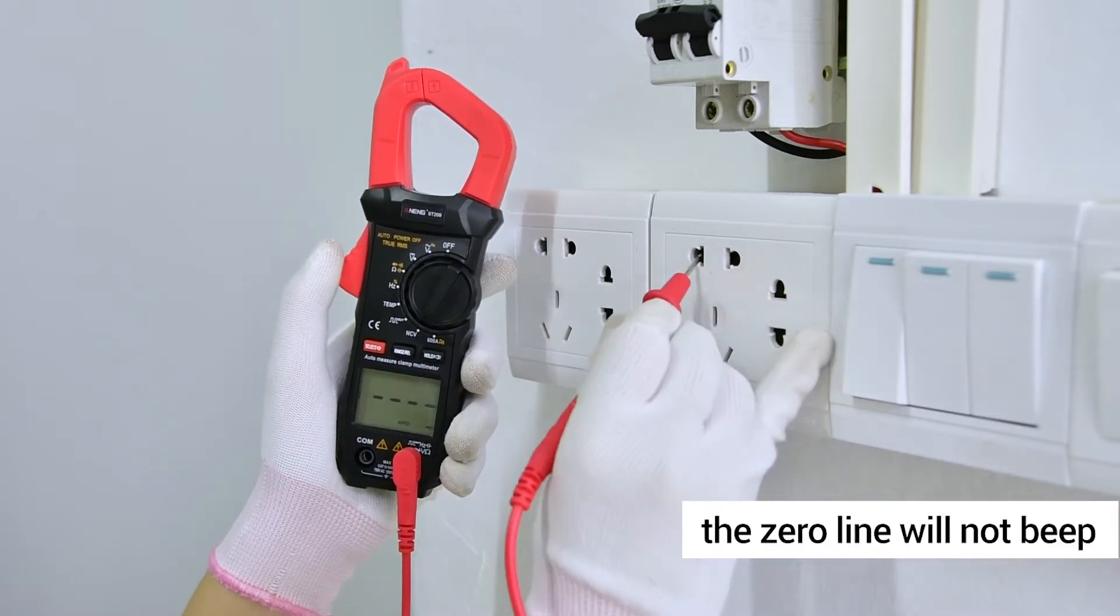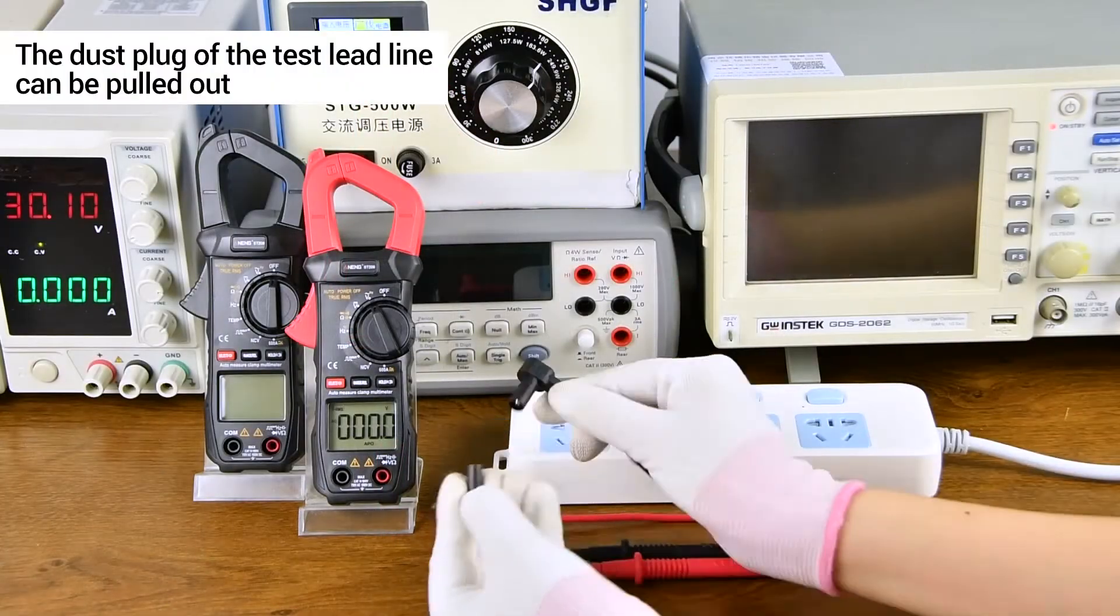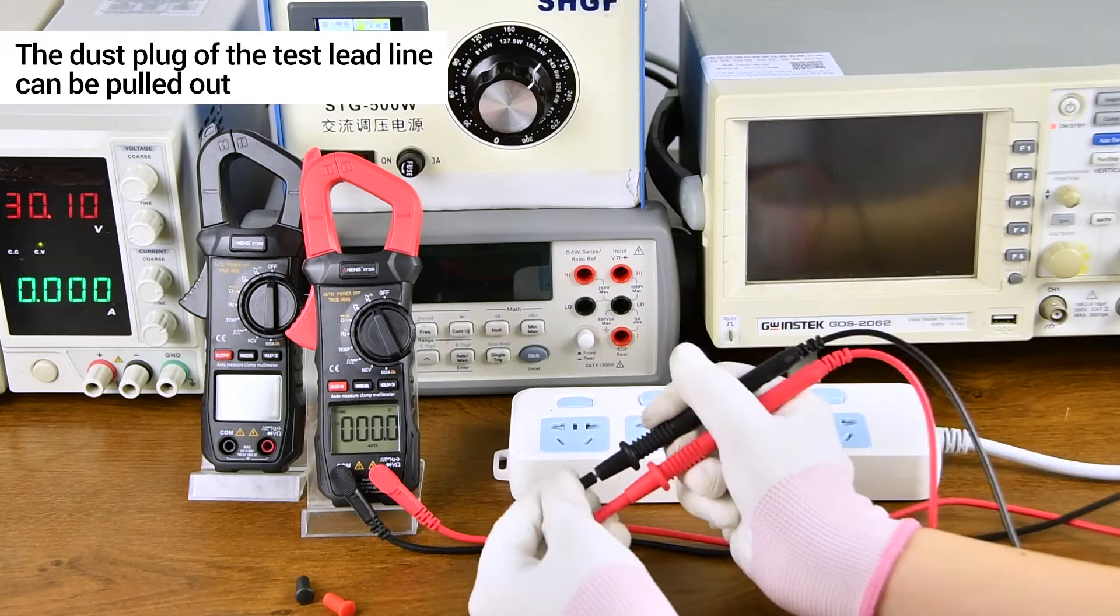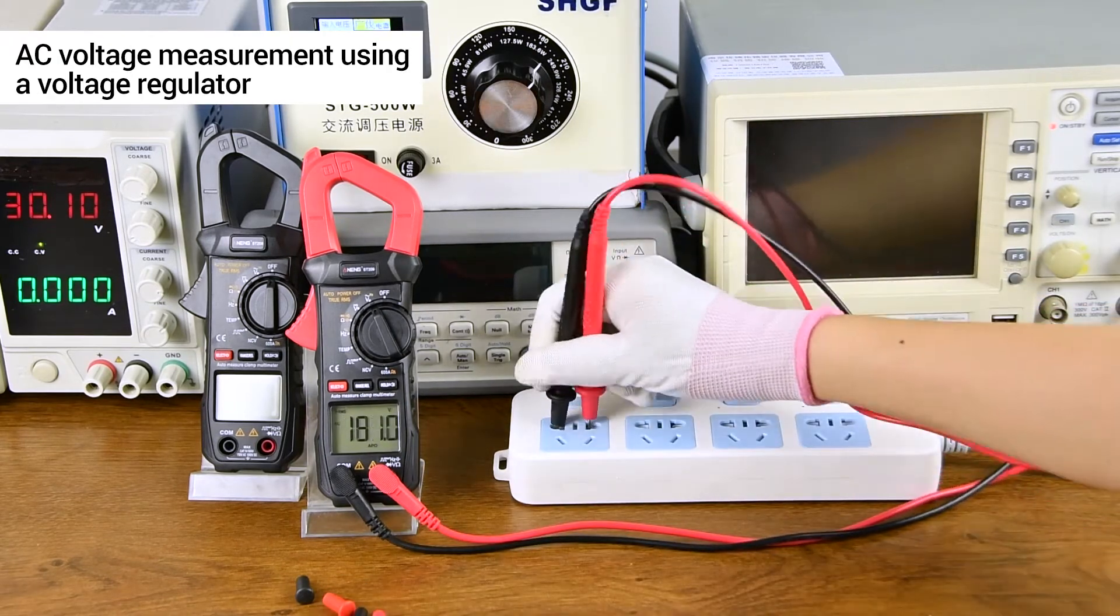Measure the zero line, no beep sound. The dust plug left test with line can be pulled out. AC voltage measurement.